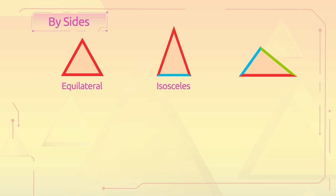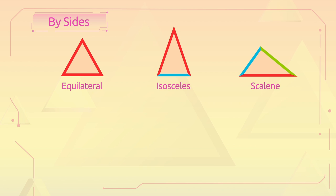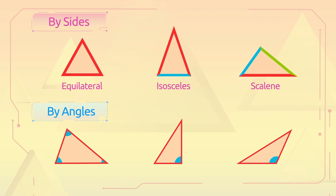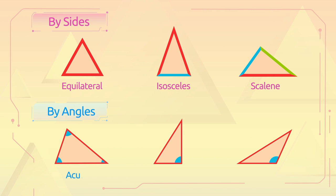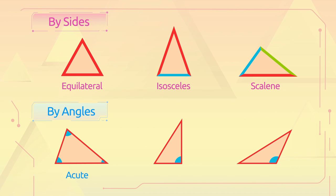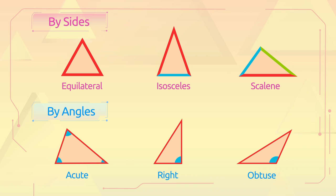The isosceles triangle has two equal sides, and the scalene triangle has all sides different. Classifying triangles depending on their angles: the acute triangle has three acute angles, the right triangle has one right angle, and the obtuse triangle has one obtuse angle.